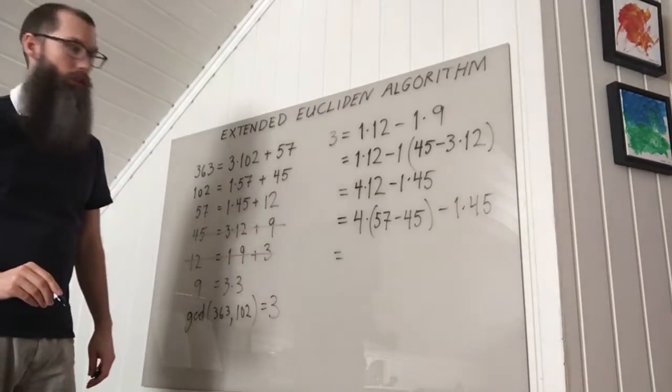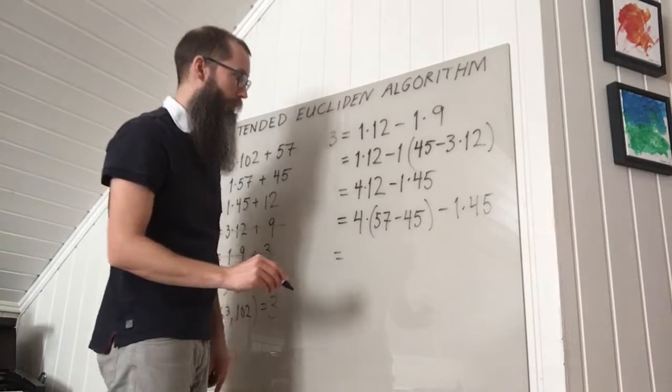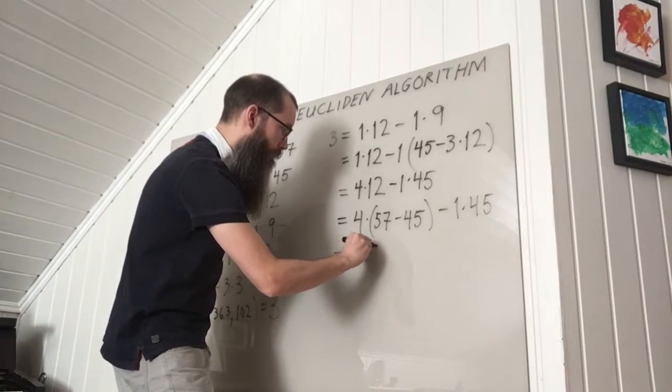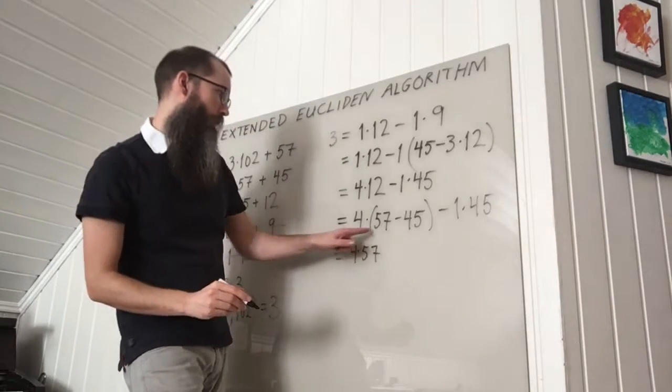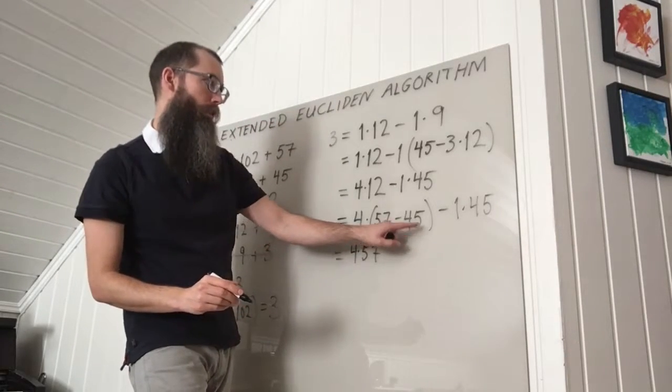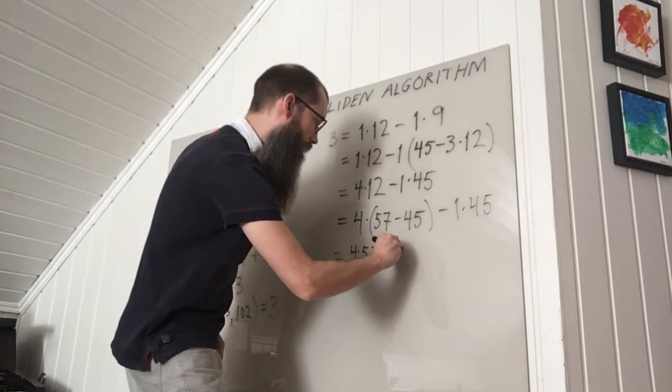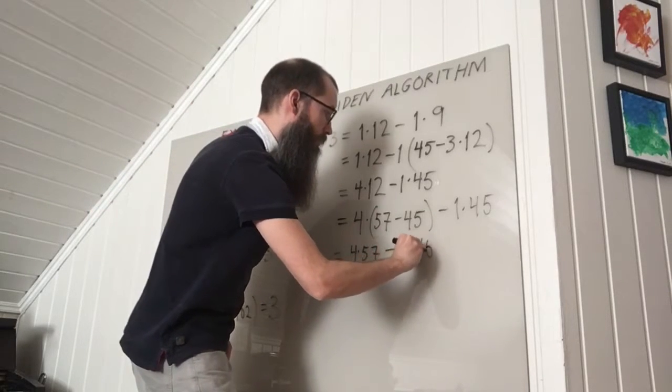Then I count up the number of 57's and 45's I have here. So I have 4 times 57. And I have minus 4 45's here and minus another one here. So in total minus 5 45's.